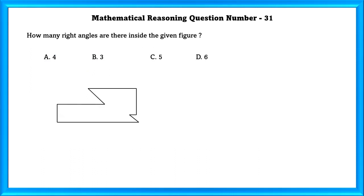Mathematical reasoning question number 31. How many right angles are there in the given figure? There are four right angles in the given figure.